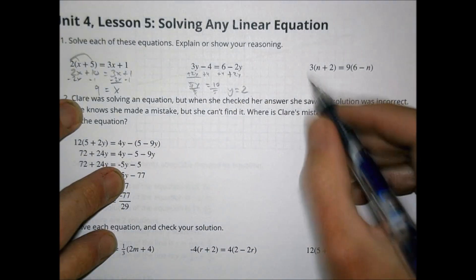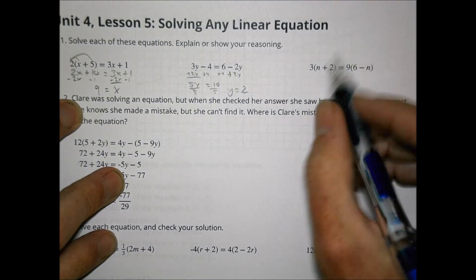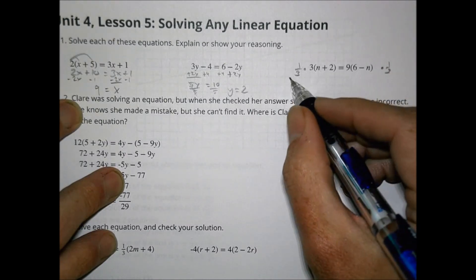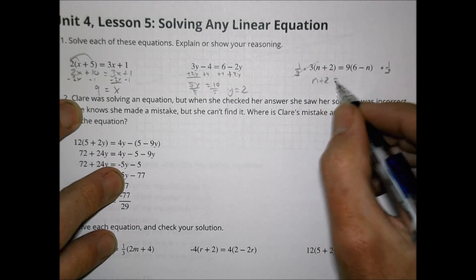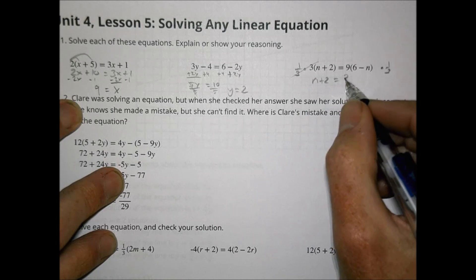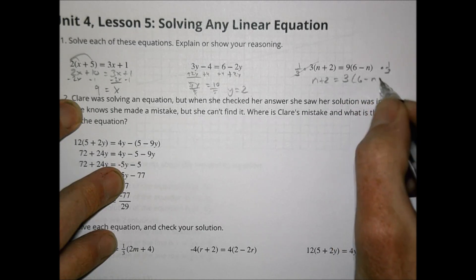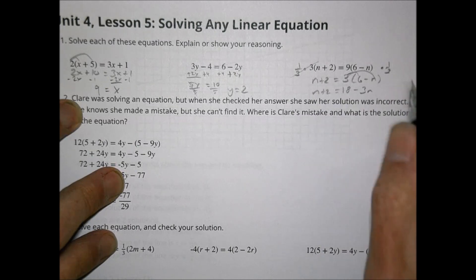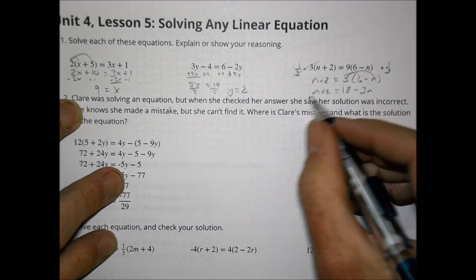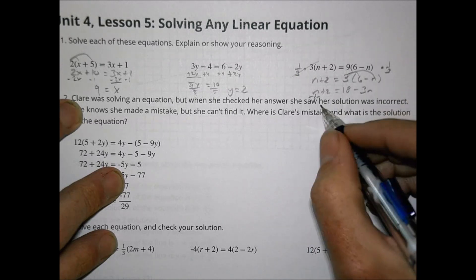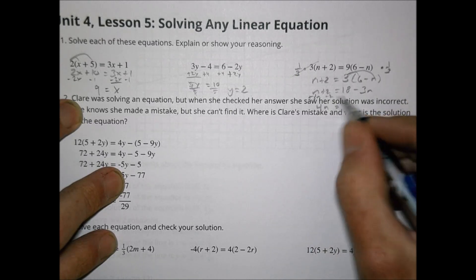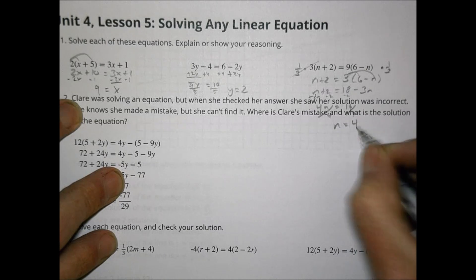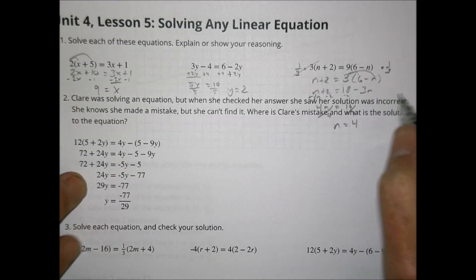For the third equation, I can multiply both sides by one-third (or equivalently divide by 3) to simplify. That gives n plus 2 equals 3, with 3 times (6 minus n) on the other side. Distributing gives 18 minus 3n equals n plus 2. Adding 3n to both sides and subtracting 2: 16 equals 4n. Dividing both sides by 4, n equals 4.